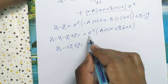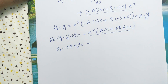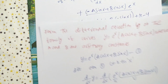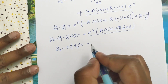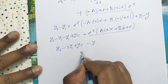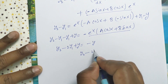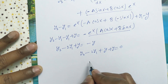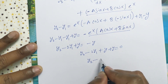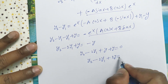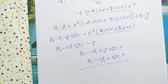Since y = eˣ(a cos x + b sin x), the right-hand side is just -y. Bringing this to the left side gives y₂ - 2y₁ + y + y = 0, that is y₂ - 2y₁ + 2y = 0. This is the required differential equation. Thank you for watching my video.